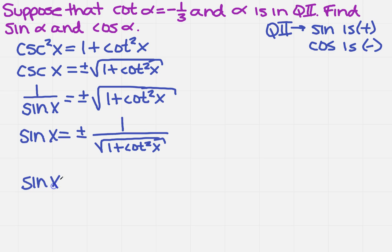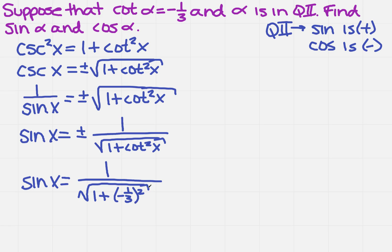The sine of x is going to equal... Now, what did we say about sine? We said it's going to be positive in quadrant 2, so we don't even care about the negative from the square root — we just want the positive. So we're going to do 1 over the square root of 1 plus cotangent squared. They told us cotangent was negative 1/3, and I'm going to square that term.